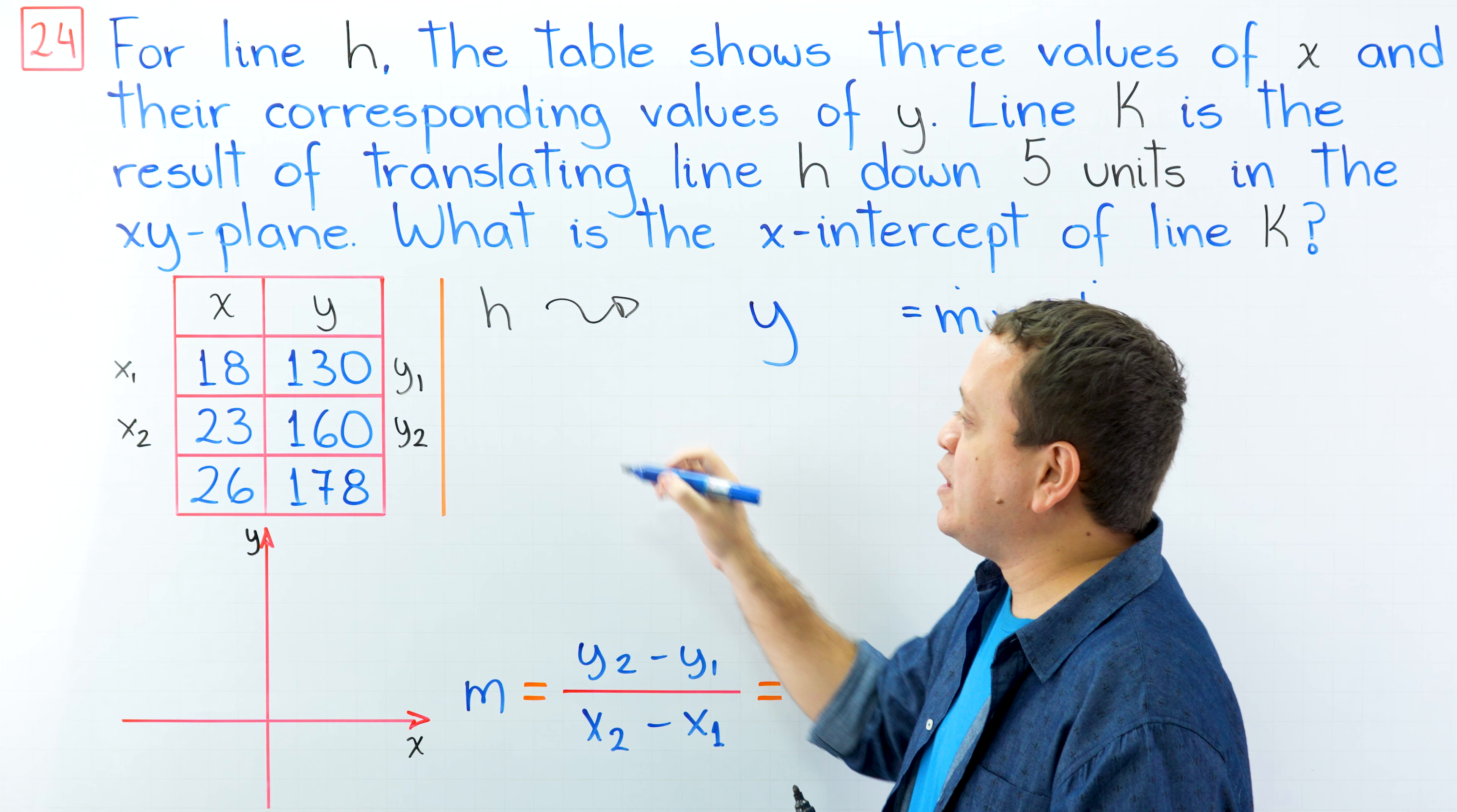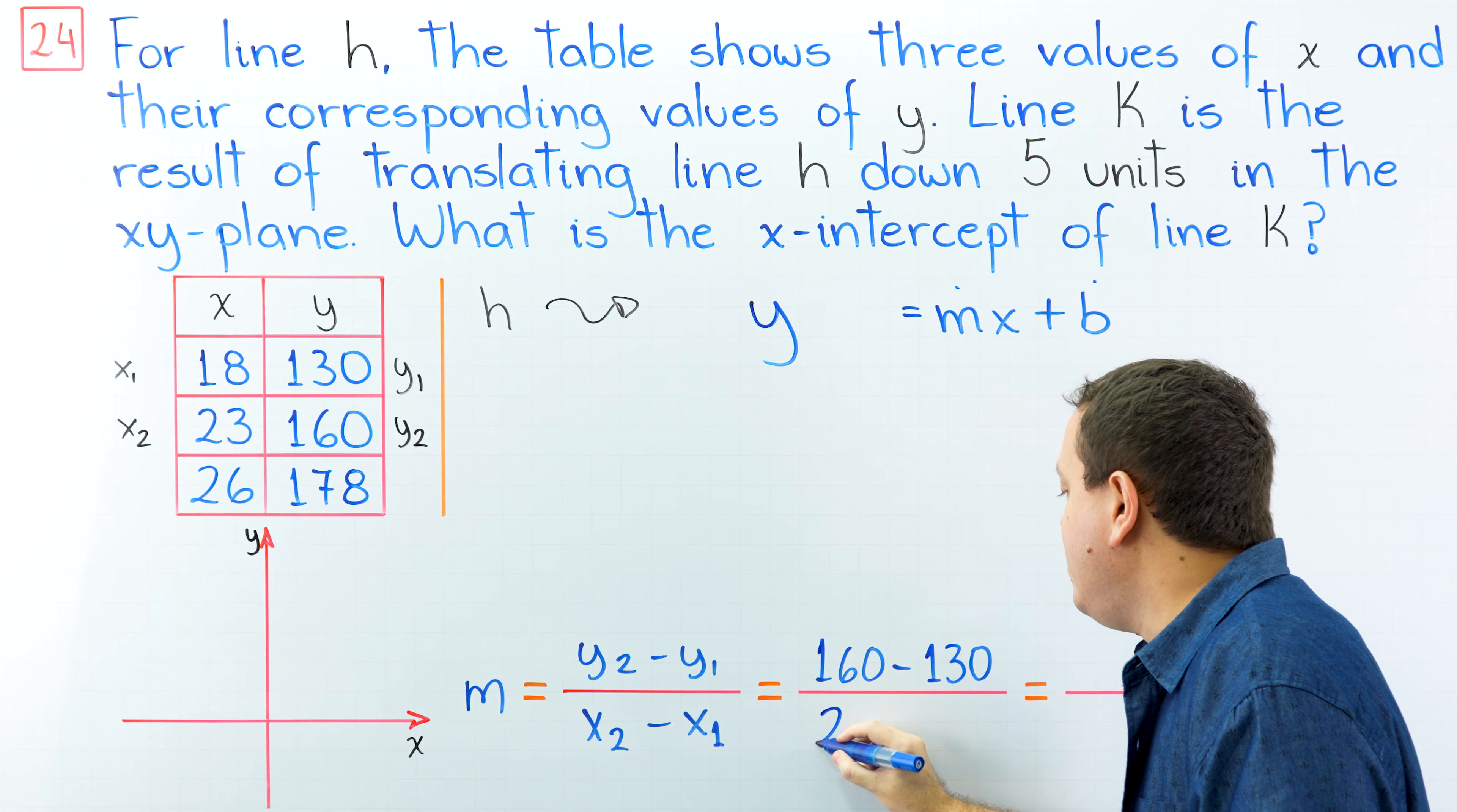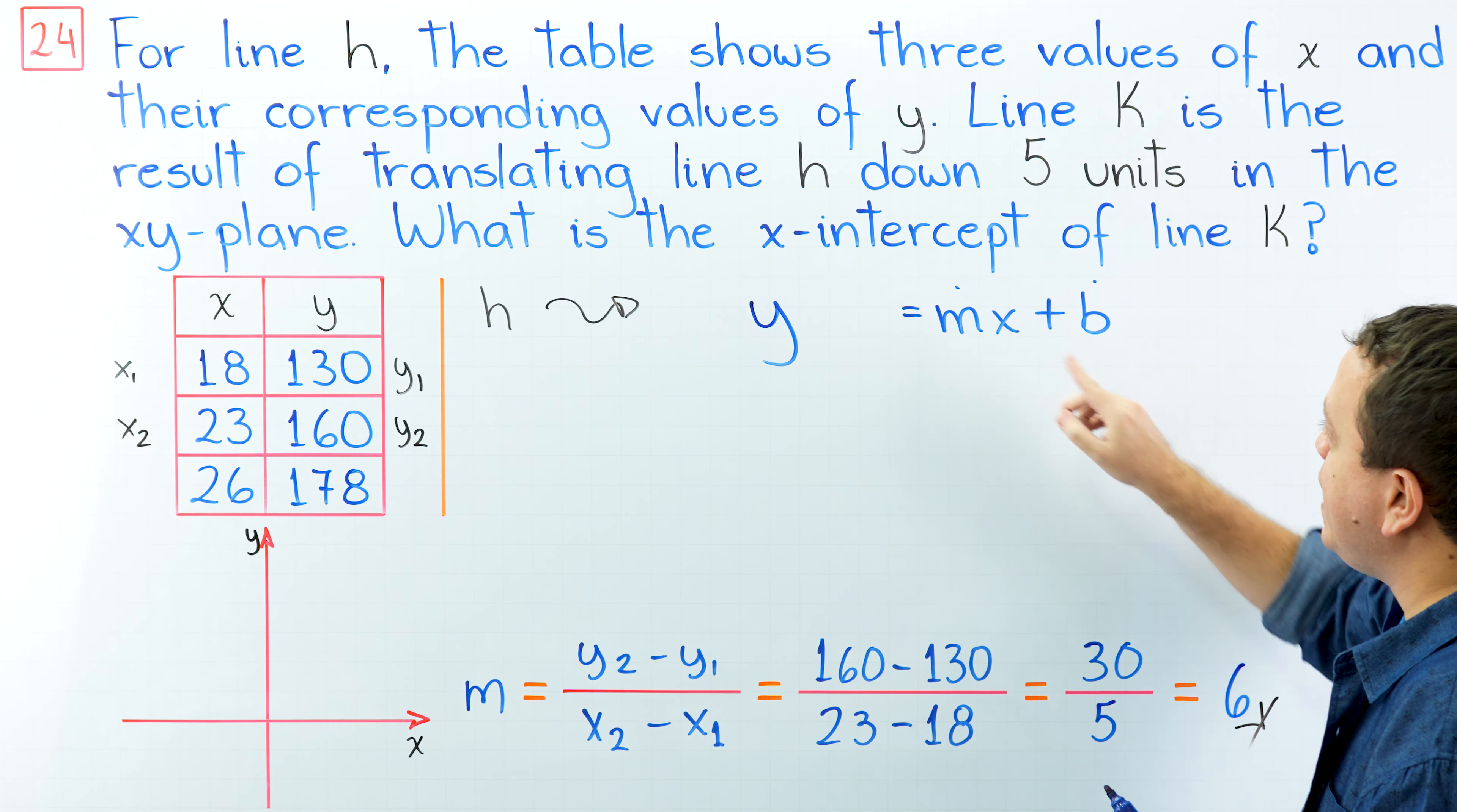Okay, now we're going to plug those values in here. Let's start with y₂. y₂ is 160, 160 minus y₁, 130. And then comes x₂, x₂ that is 23 minus x₁, that is 18. And then 160 minus 130 gives us 30, and 23 minus 18 is 5. Finally, 30 divided by 5 gives us 6.